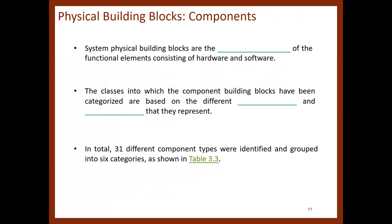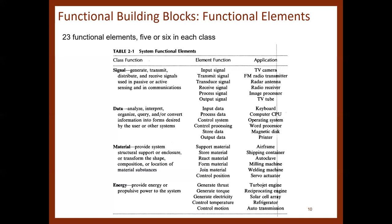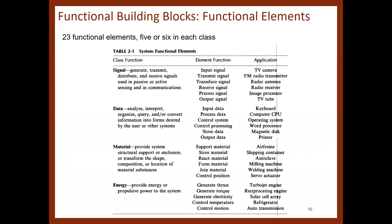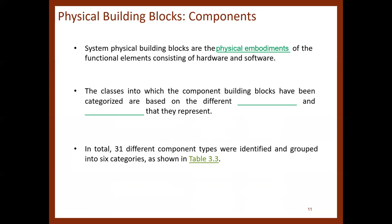So what are the components for the physical building blocks? We were talking about functional building blocks; now we transition to physical building blocks, which are the components. System physical building blocks are the physical embodiments of the functional elements, consisting of hardware and software. The classes into which the component building blocks have been categorized are based on different design disciplines and technologies. In total, 31 different component types were identified and grouped into six categories, shown in table 3.3.